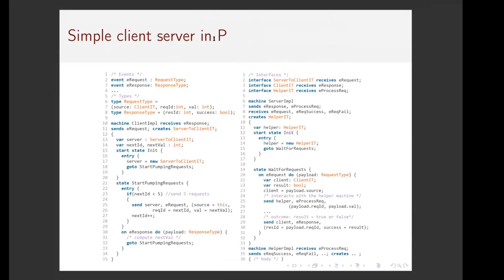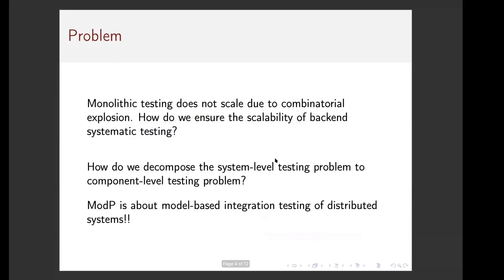This was an example of P language server code. You can have event types, message types, you create a machine, and there are also interfaces. You say that interface, and then in another file you say that this machine implements this interface — like in Go or Rust. If you look at a machine, it just declares: I send this message, I receive this message, I accept this message. So for example, this one receives these messages and sends these messages.